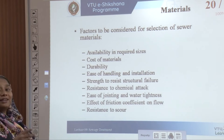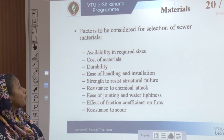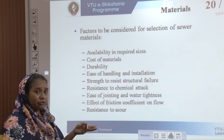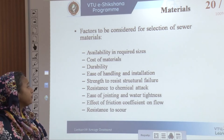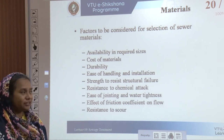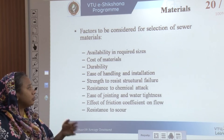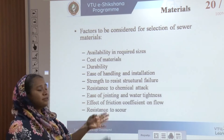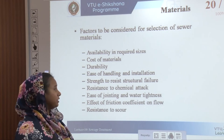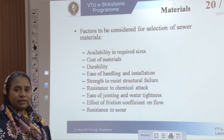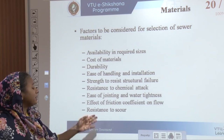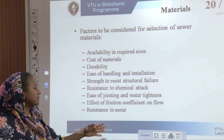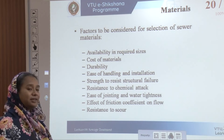Factors considered in selecting a material for sewers include: availability of required sizes, cost and affordability, durability, ease of handling and installation, strength to resist structural failure, resistance to chemical attacks, ease of jointing and water tightness, effect of friction relative to its coefficient of flow, and resistance to scour — the scouring velocity should be resistantly higher.